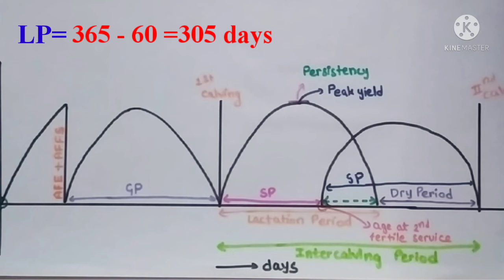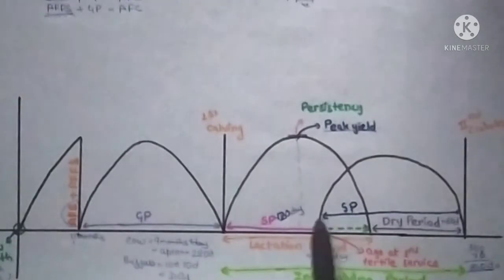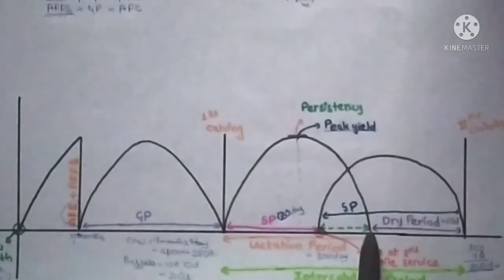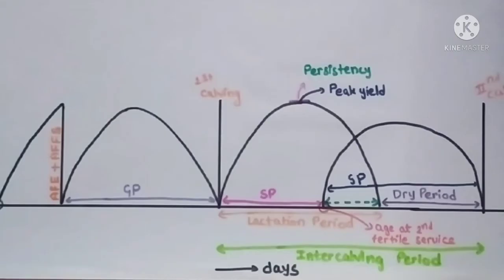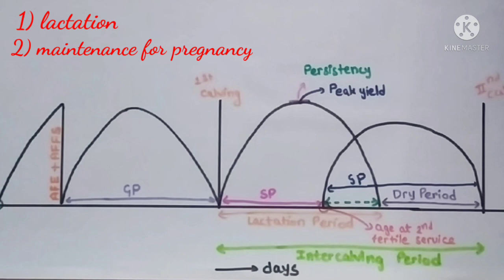This period or region is more energy-consuming for the cow, as she has to do more work. First, she has to lactate, then maintain the pregnancy, and then her own maintenance.